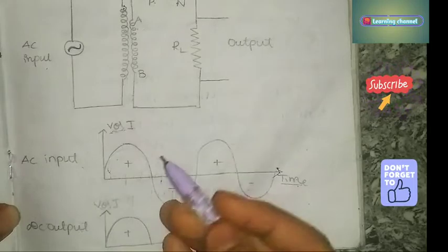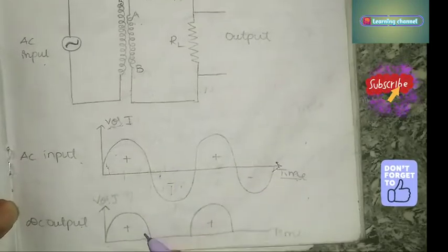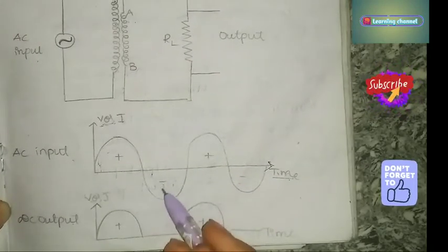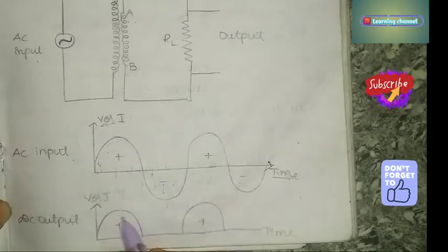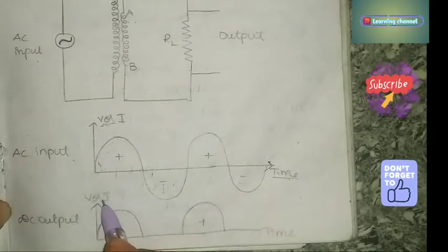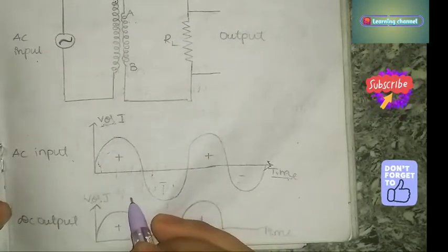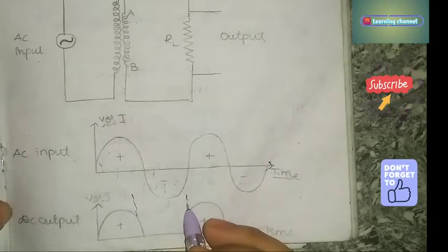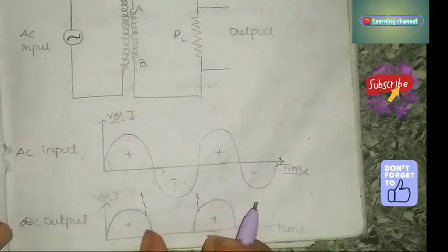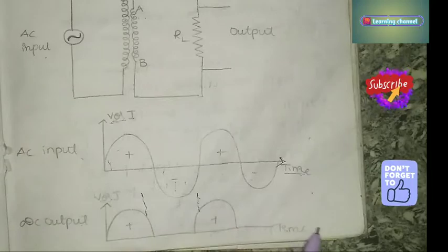For the DC output waveform: only positive cycles appear in the output. The negative cycles are absent, so there are gaps where the negative cycles would have been. Mark the V or I axis and the time axis accordingly.